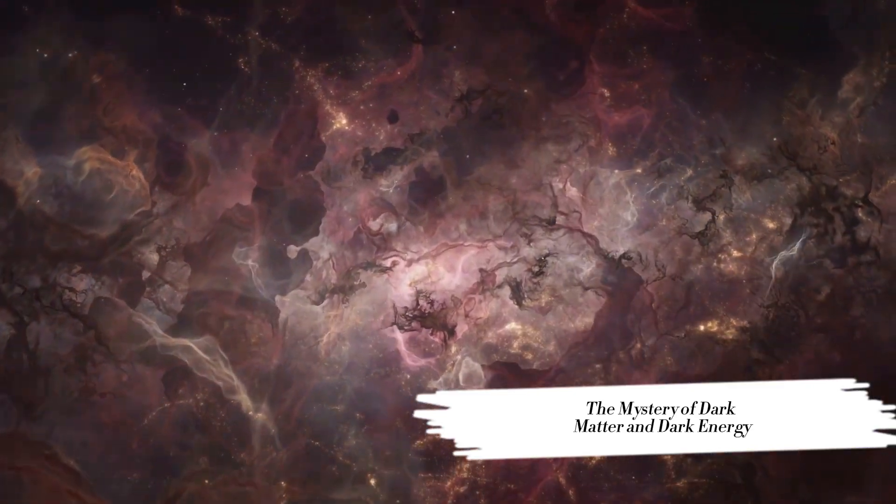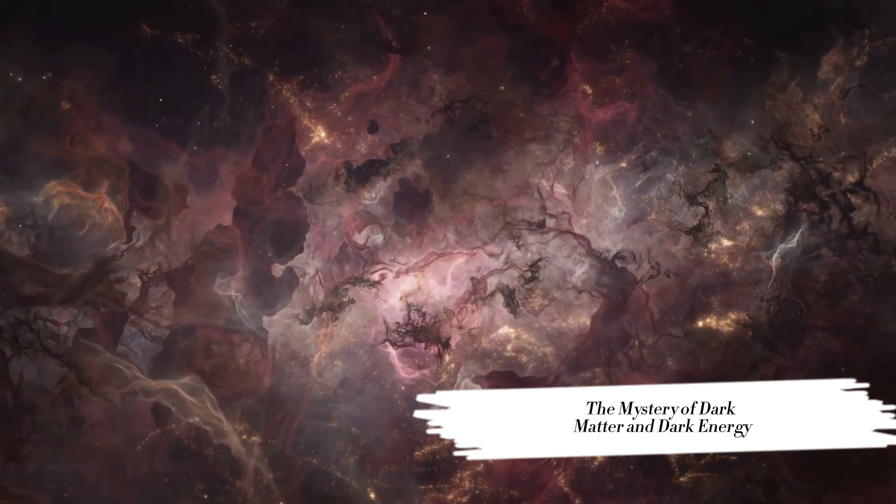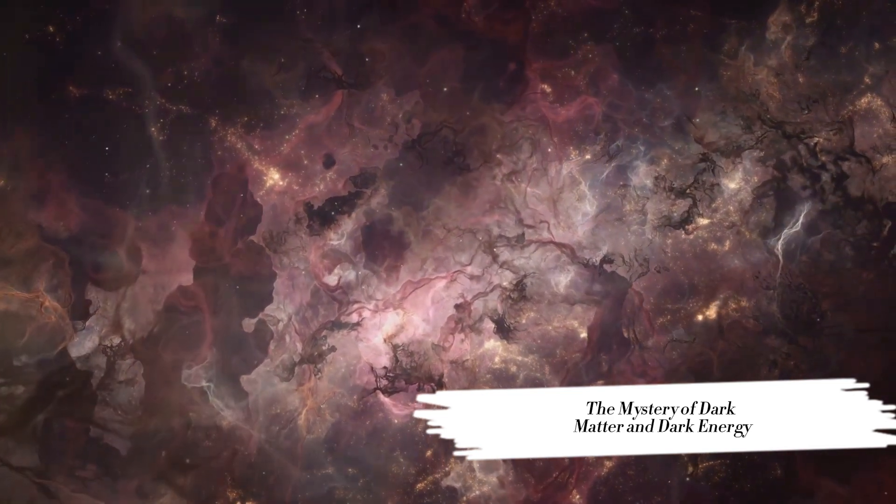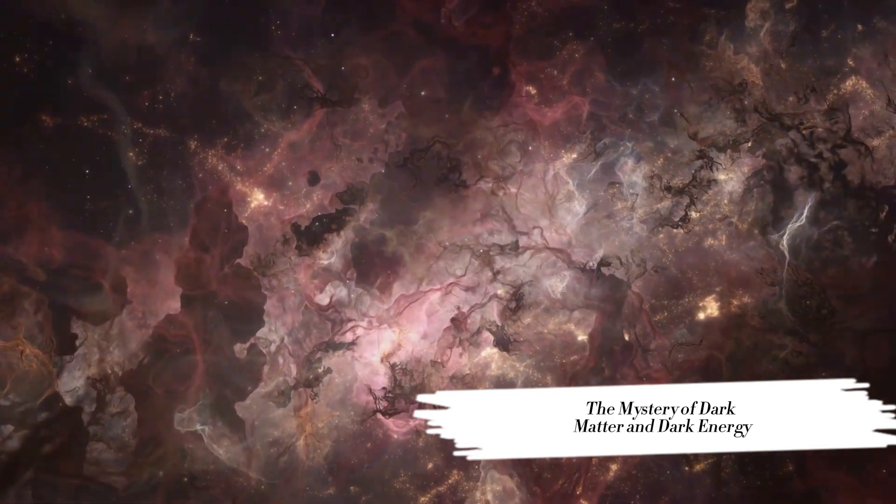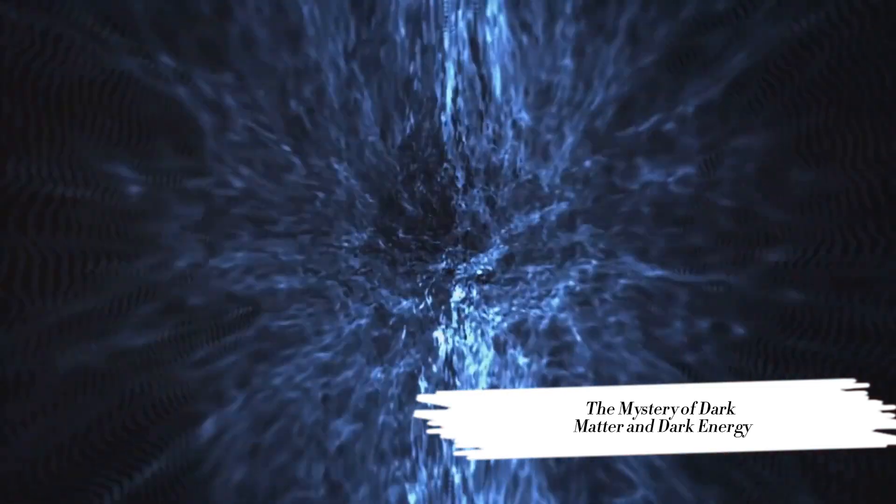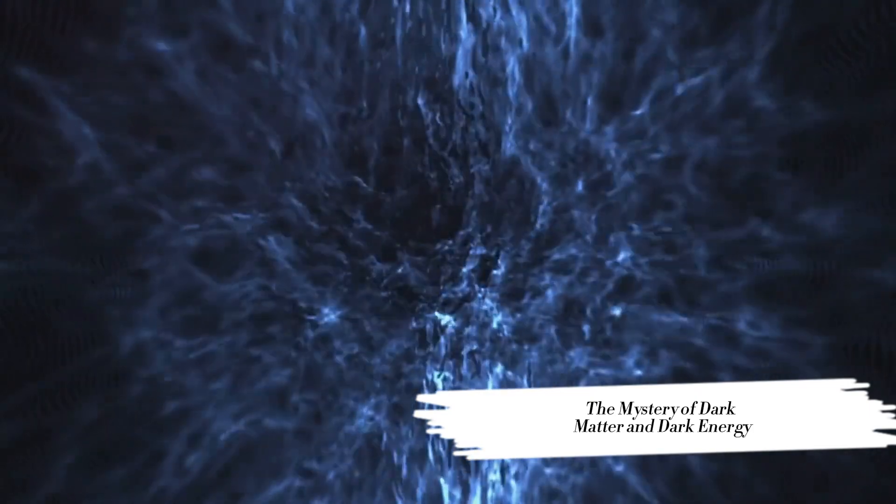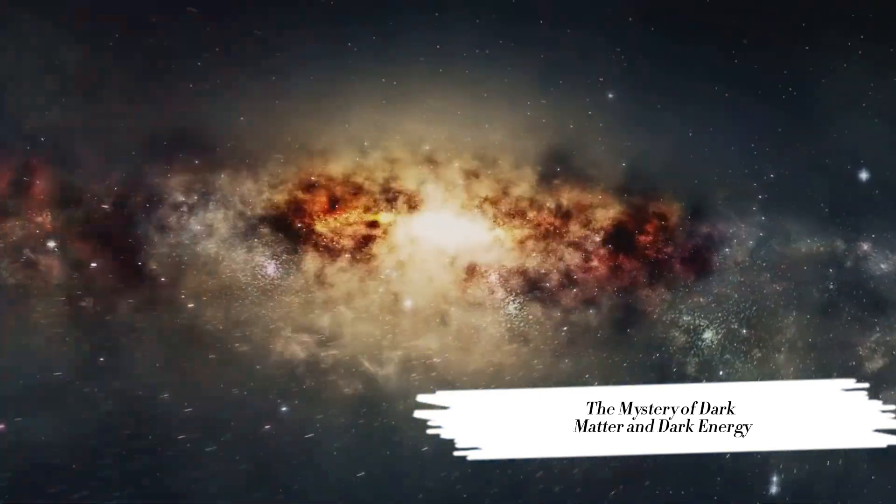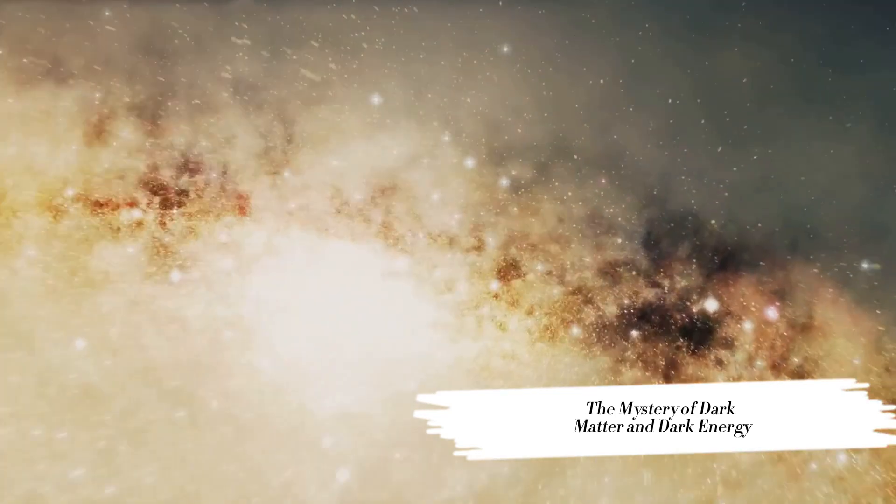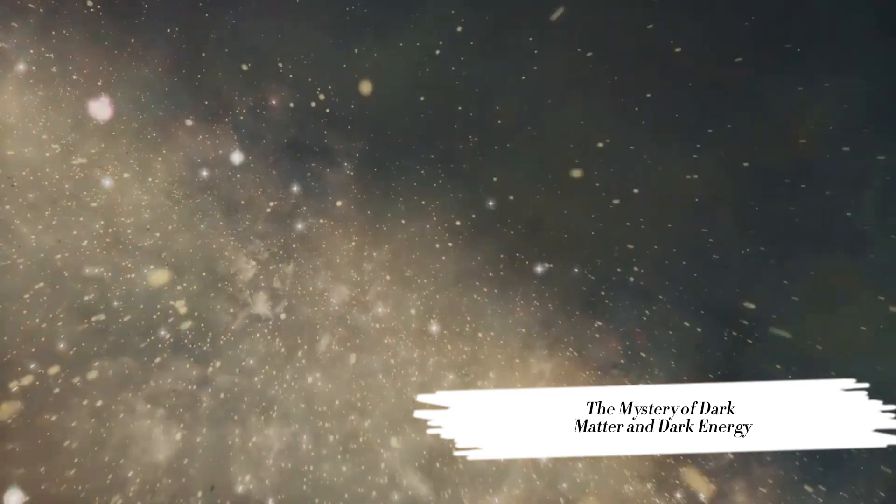Picture dark matter as an invisible web weaving through the universe, a silent puppet master pulling the strings. It doesn't interact with light or any form of electromagnetic radiation making it incredibly elusive. Yet, we know it exists because of its gravitational influence on galaxies and galaxy clusters. It's like wind. We can't see it, but we can see its effects on the leaves of a tree. But what exactly is dark matter? Is it made of undiscovered particles? Or does it hint at the need for a new understanding of physics? These are questions that continue to baffle scientists.